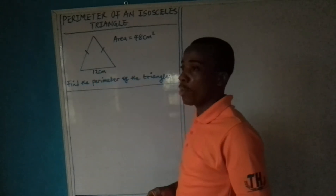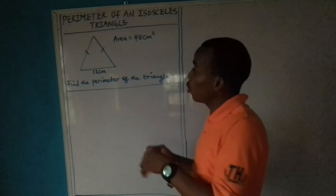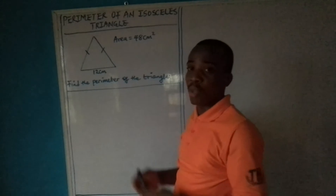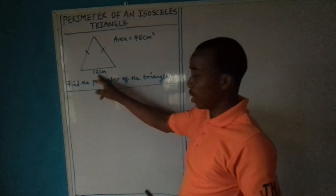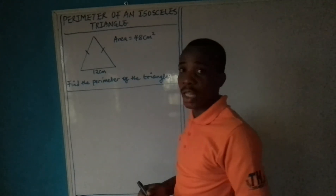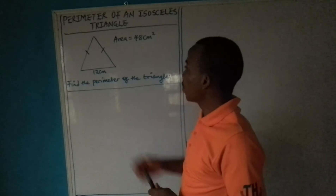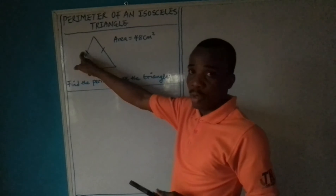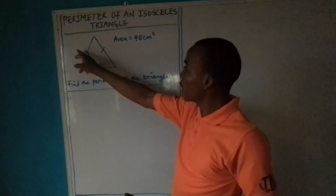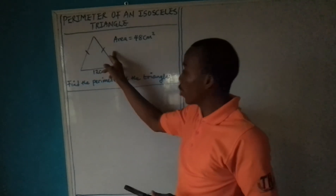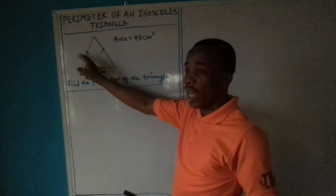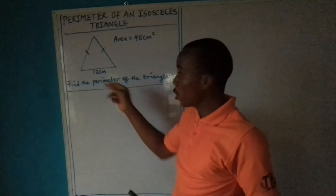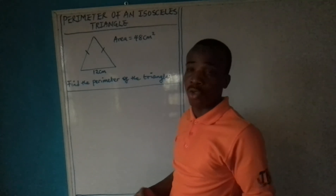Before you can find the perimeter of an isosceles triangle, you need to know the two equal sides. Then you will multiply by 2 and add it to the base to get the perimeter. But from here, we don't know what the two sides are, so our aim is to find one side. If we can get one side, we know it is equal to the other side — we just take one of the equal sides, multiply it by 2, and add it to the base. That gives us the perimeter of the isosceles triangle.